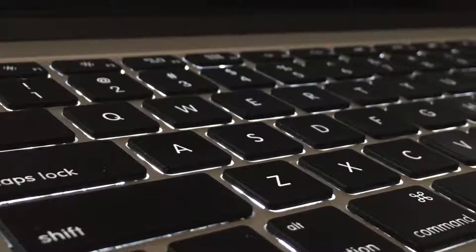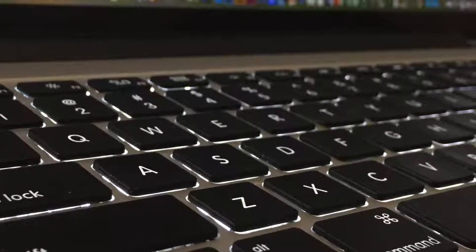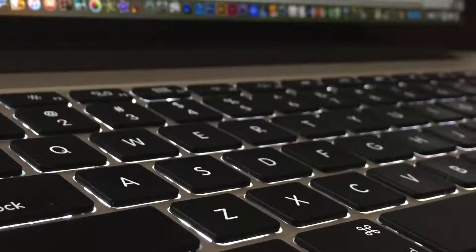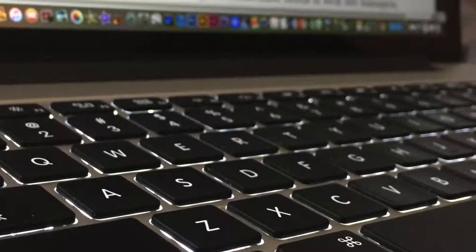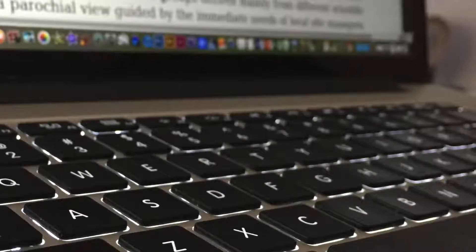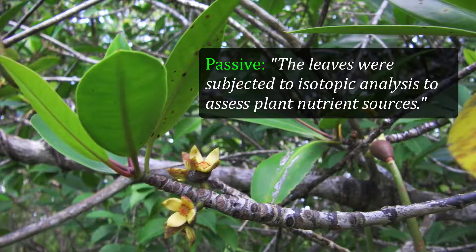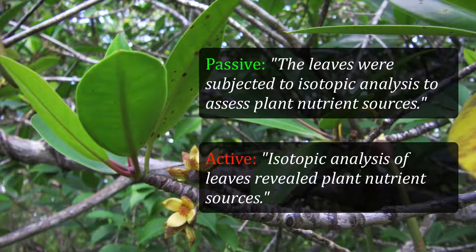In scientific writing, the passive voice is used because it supposedly sounds more scholarly and imparts a tone of detachment and humility. But use of the passive voice in scientific writing is a big part of why technical writing can sound stilted and robotic. The active voice makes sentences come alive and also tends to require fewer words. For example, consider: 'The leaves were subjected to isotopic analysis to assess plant nutrient sources' versus 'Isotopic analysis of leaves revealed plant nutrient sources.' The active construction in the latter sentence is more dynamic and requires fewer words.